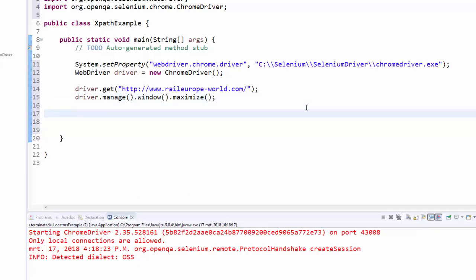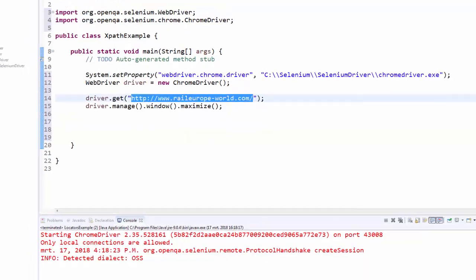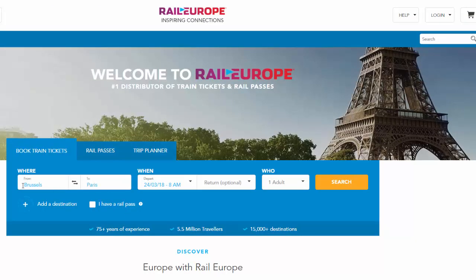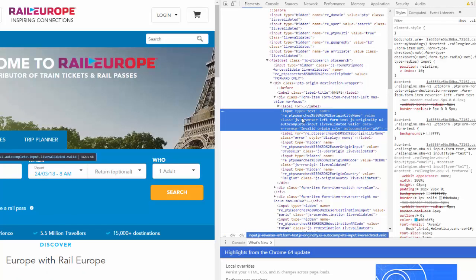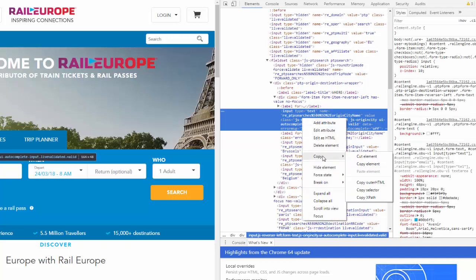After this we should know the XPath values. So I opened the rail europe page. We need to input values Brussels and Paris, then click on search button. How to inspect this? Just right click. Inspect. This is the value for from web element. Right click. Copy. XPath.